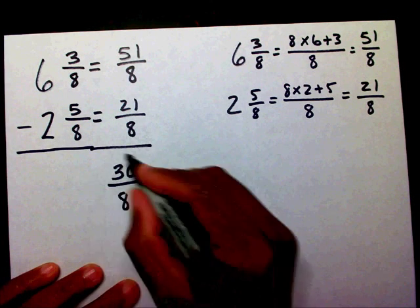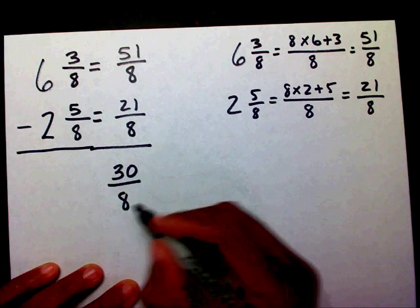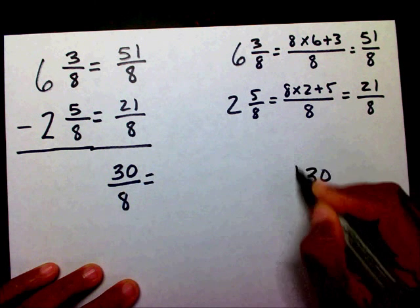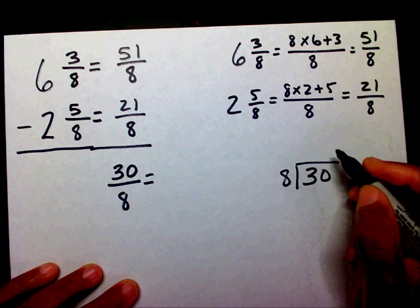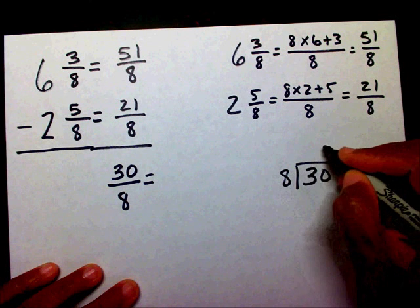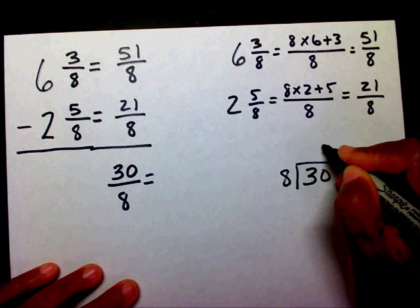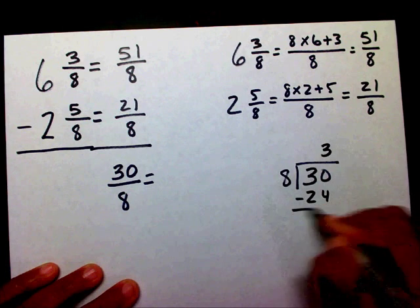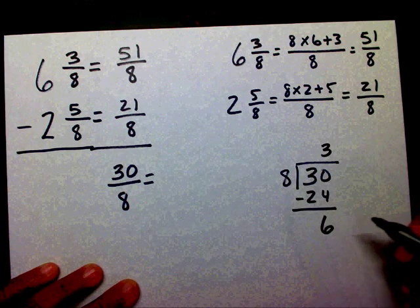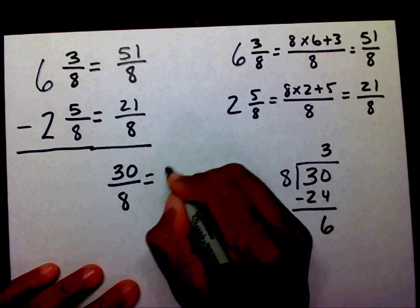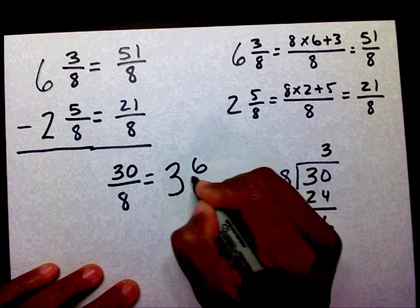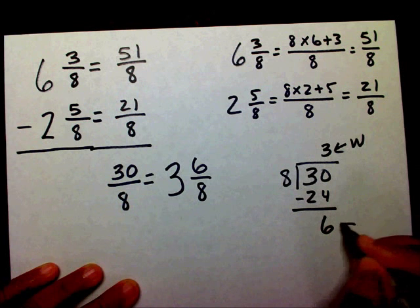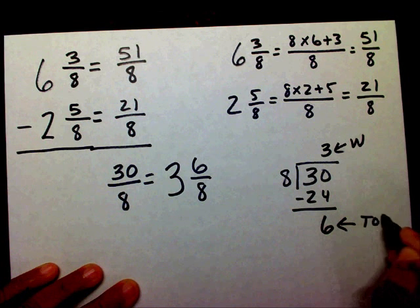This is an improper fraction — I need to change that to a mixed number. Thirty divided by eight: eight will go into thirty three times. Subtract twenty-four, and that's going to be six. So I end up with three and six-eighths. Three is my whole number, six is my top number, and eight is my bottom number.